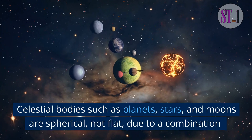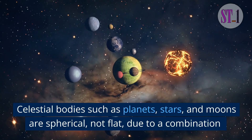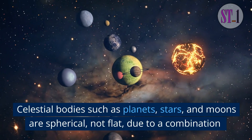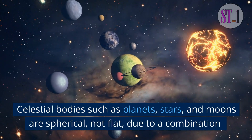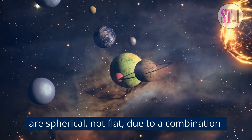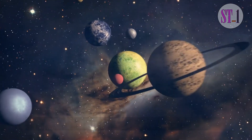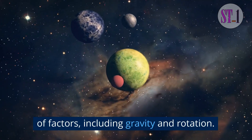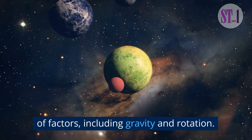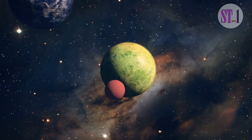Celestial bodies such as planets, stars, and moons are spherical, not flat, due to a combination of factors, including gravity and rotation.